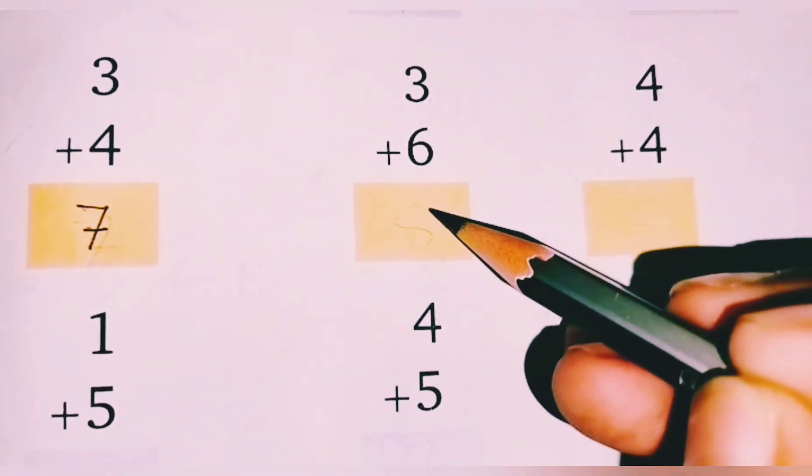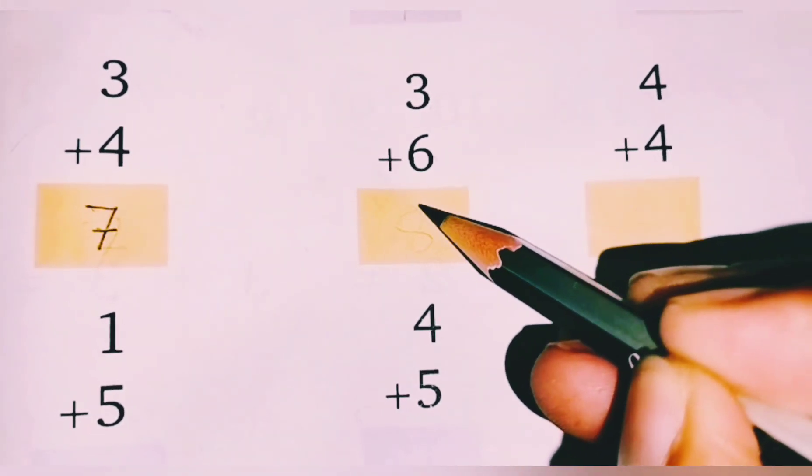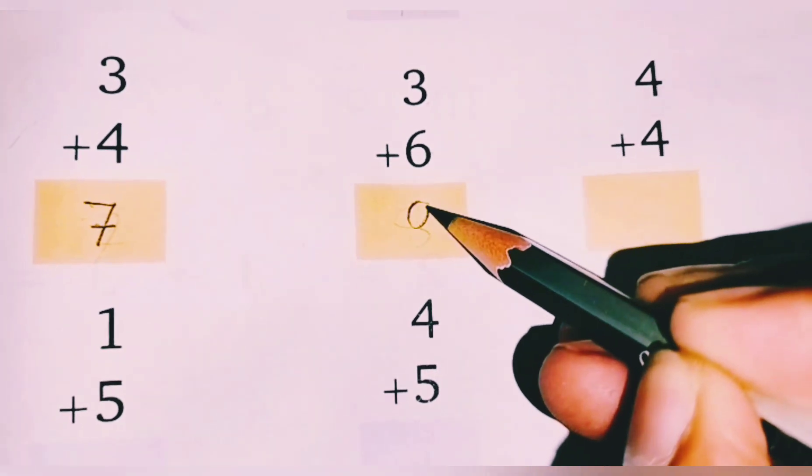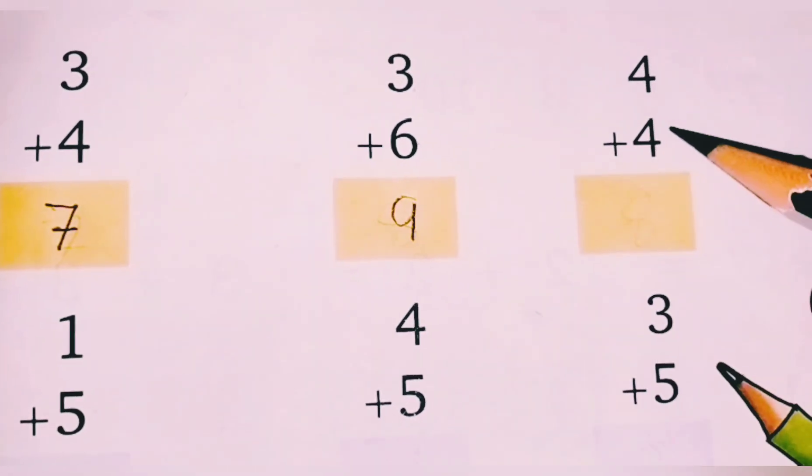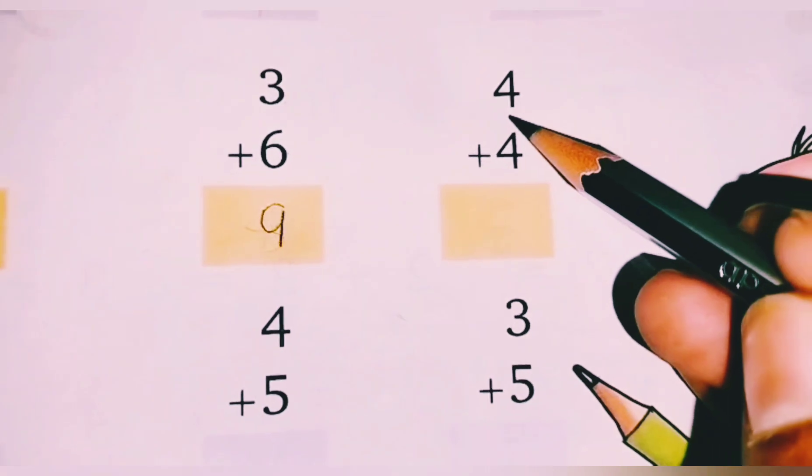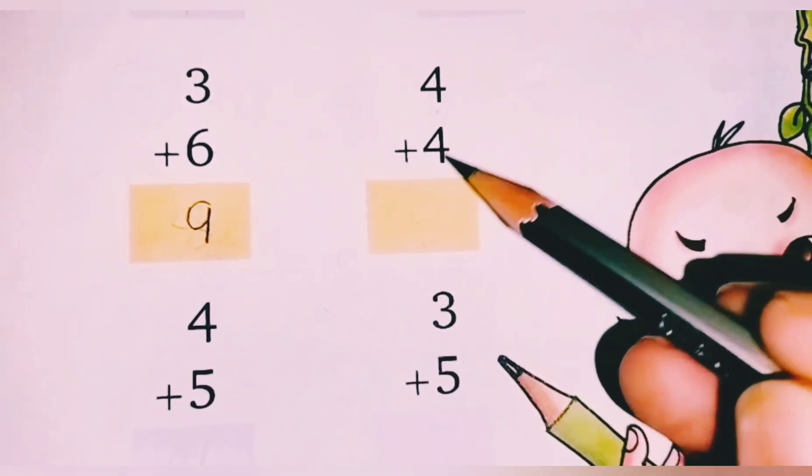3 plus 6, 3 plus 6 equals 9. Nine. Okay, and then the next number is 4.